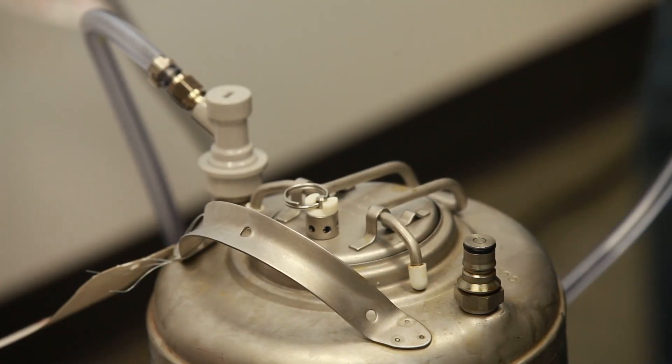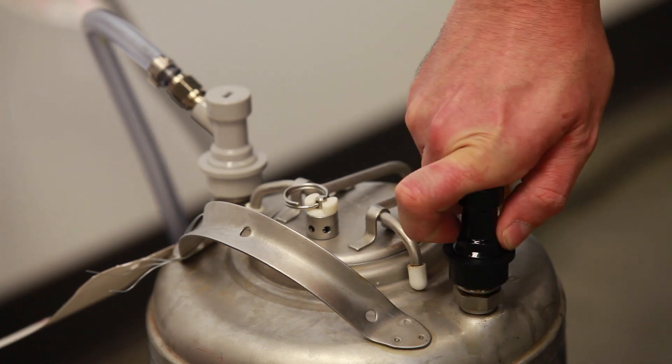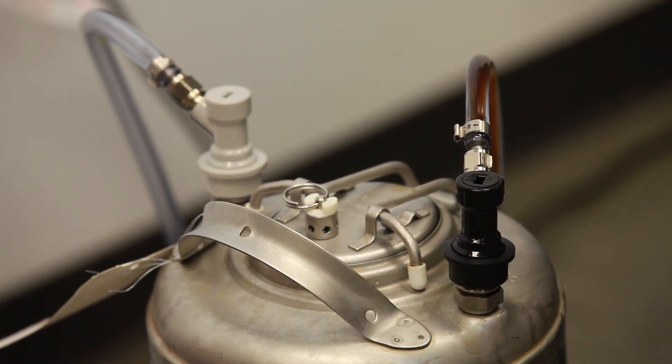When using the Last Straw, it's not necessary to purge the keg and lower your serving pressure. Simply attach the Last Straw to the beer keg and you're ready to go.